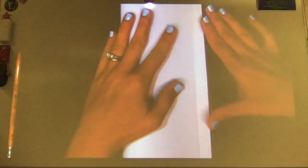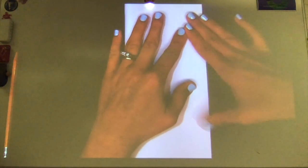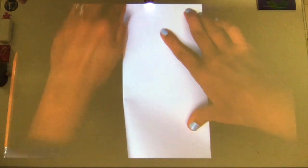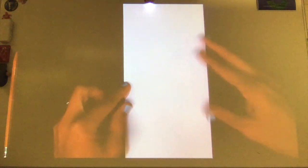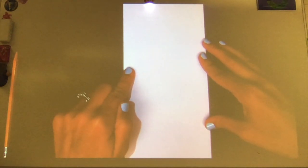So go ahead, decide which way you want to fold your paper, and then go ahead and do that. And then you want to make sure that the fold is on the left side. It's just like you're reading a book. If you open it up, the fold should be on the left.